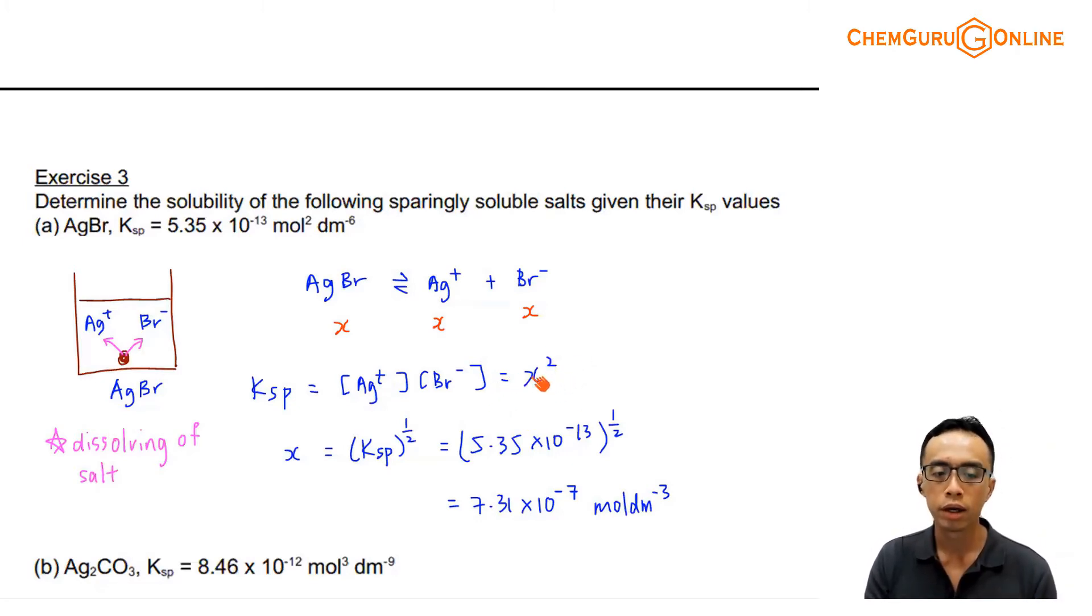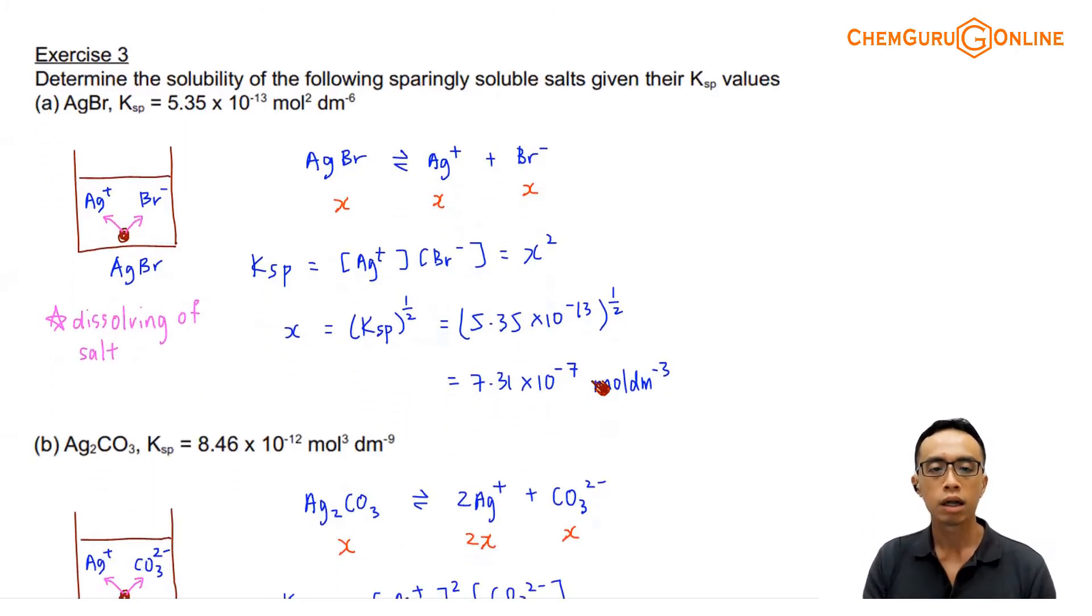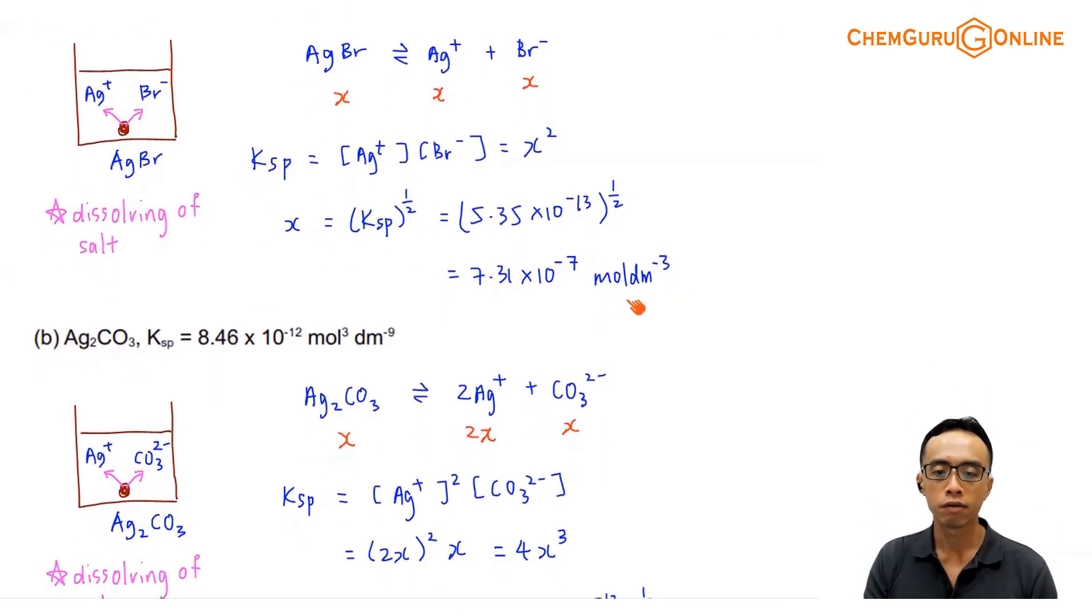So once I have this as X squared, then X will just be the square root of Ksp. I will be able to get this value 7.31 times 10 to the power of minus 7.